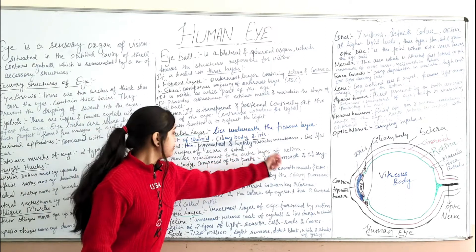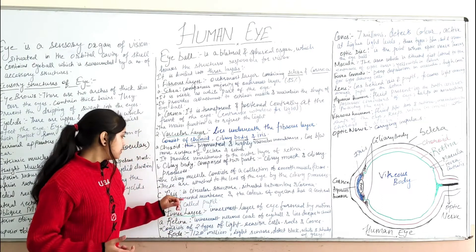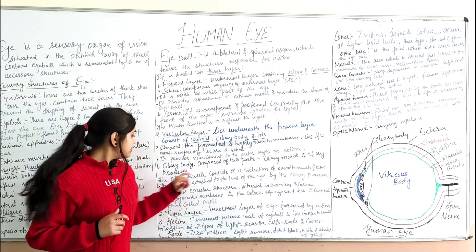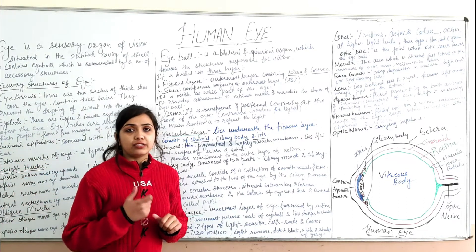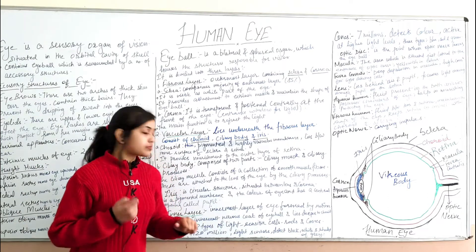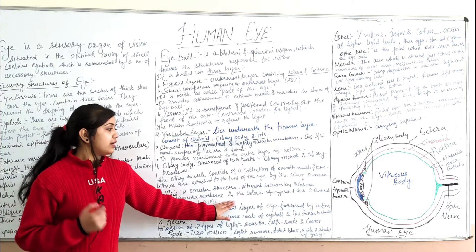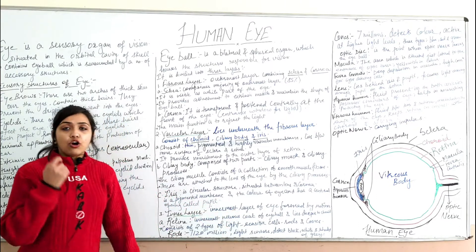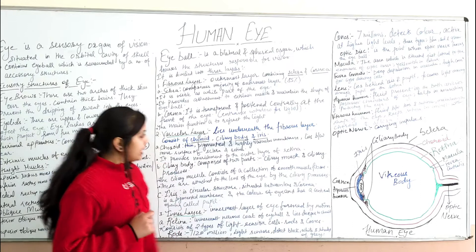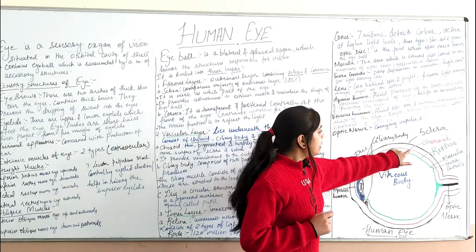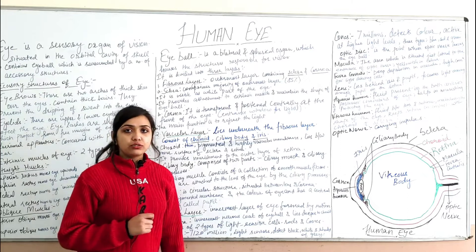The ciliary body is comprised of two parts: ciliary muscles, which are smooth muscle fibers, and ciliary processes, which attach to the lens. The iris is the colored portion of the eye — a circular, pigmented membrane situated between the lens and the cornea. In the diagram, the black layer is the sclera, the red layer is the choroid, and the green layer is the retina.